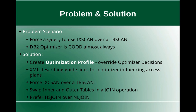This slide talks about the problem and the solution. The problem scenario is simple: we want to force a query to use an index scan operation over a table scan operation. For some reason the DB2 optimizer chooses a table scan despite there being an index, but the DB2 optimizer is almost always good in what it is doing. So never try to modify its behavior or override the optimizer decisions — it is usually not required. But in some weird cases, or for some testing, you want to force a particular index over a table scan.